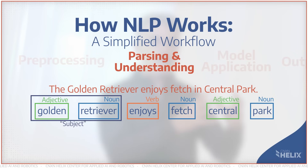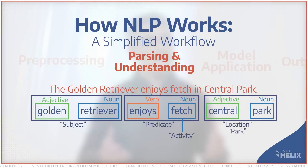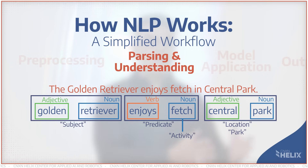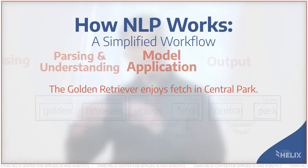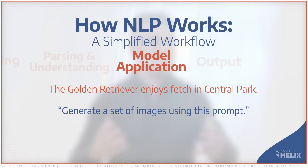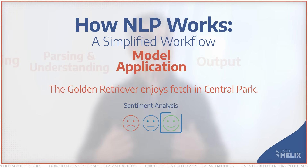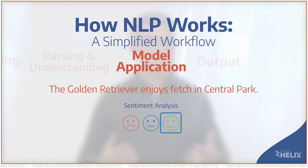This is where NER and POS tagging also come into play. Named entities are recognized, and parts of speech — which is POS — are tagged, identifying verbs, nouns, and other such elements. And then finally there's the model application, where a trained model is used to predict or generate text, translate languages, or perform other tasks. And finally, sentiment analysis — if required — understanding the sentiment of the text to determine its emotional tone.